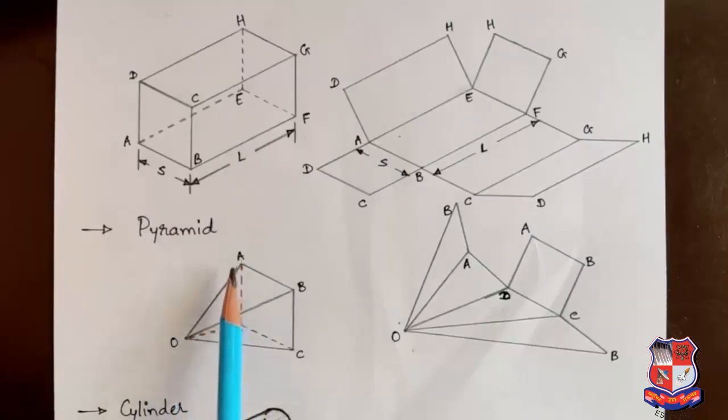The faces are AOB, BOC, COD, and DOA. ABCD is the base. We have total four faces which are triangles. The base is square, so we call it a square pyramid.